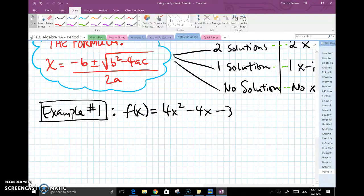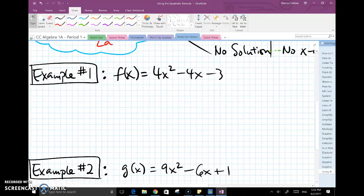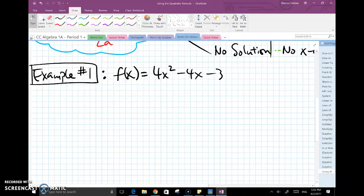There are three examples that I have for each of these cases. So let's take a look at the first one. The function is right here: f(x) = 4x² - 4x - 3.